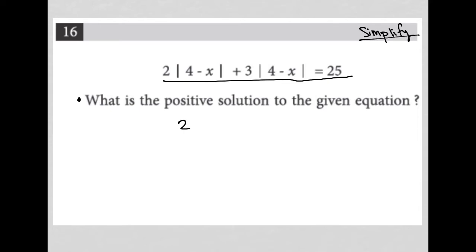Let's write our equation down. We have 2 absolute value 4 minus x, close absolute value, plus 3 absolute value 4 minus x, close absolute value, equals 25.